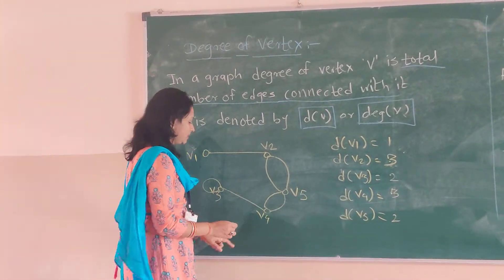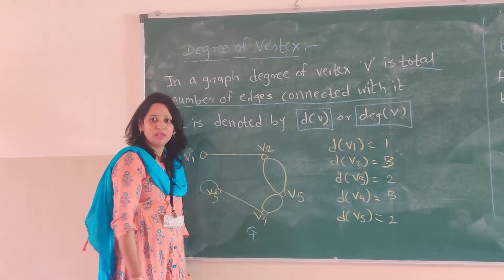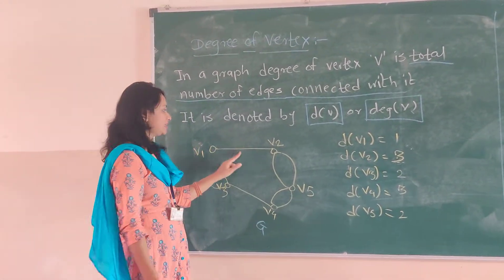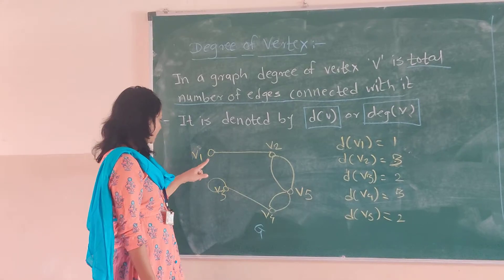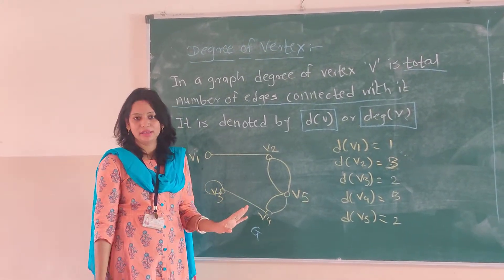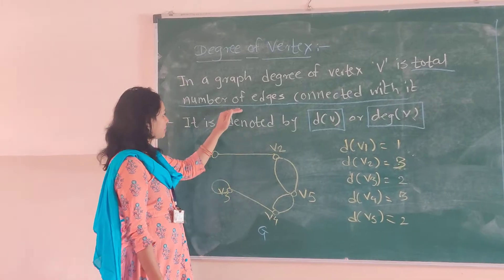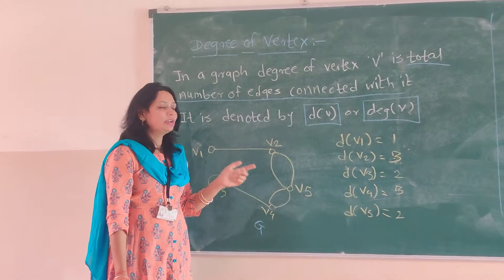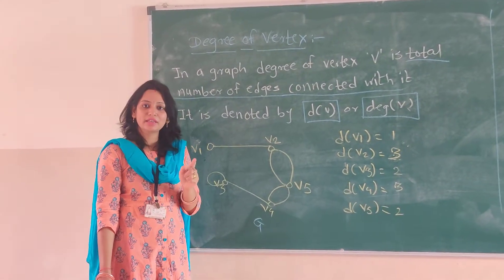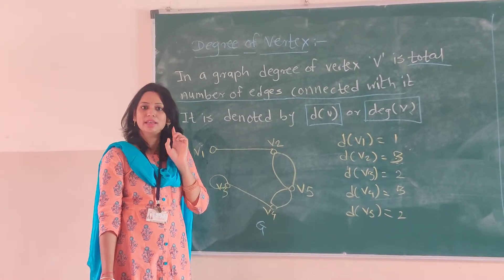Suppose we have this graph G which is a combination of vertices and edges. We can see all the vertices are connected by edges. As per the definition, the total number of edges connected to that particular vertex is its degree.